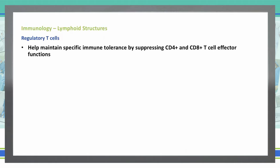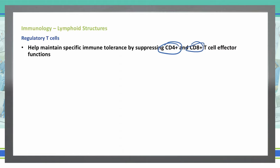What is the function of regulatory T cells? They help to maintain specific immune tolerance by suppressing our CD4 and CD8 T cell effector functions. How do we identify them? We can test them for the presence of CD3, CD4, CD25, and the FOXP3 expression.